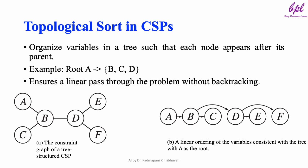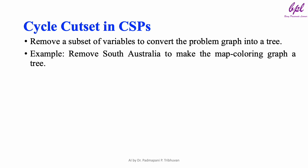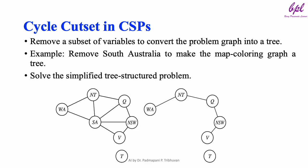Cycle cut sets in CSPs: In cases where the constraint graph is not already a tree, we can use a cycle cut set to remove certain variables, transforming the graph into a tree. For example, by fixing a value for South Australia, the remaining map coloring graph becomes a tree. Once this transformation is done, we can apply tree-based methods for a more efficient solution.